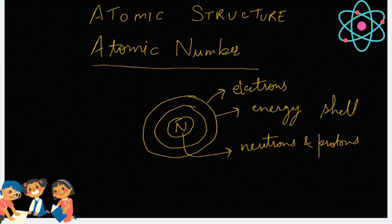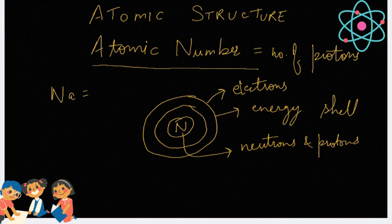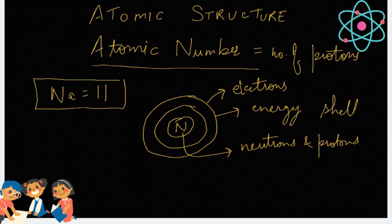Now, when I talk about Atomic Number, as I said, it is equal to the number of protons present in the nucleus of the atom. So, if I say sodium has the atomic number 11, which means the number of protons present in sodium is 11.